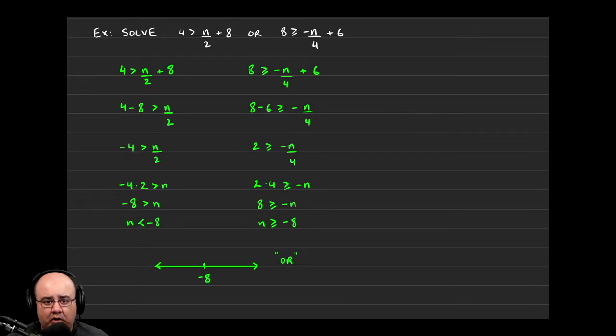So this is an or compound inequality in one variable, because we just have n, there's no two variables. Those are coming up soon. As the instructions state in the past,